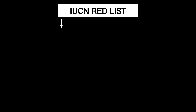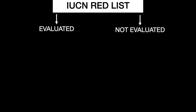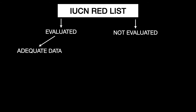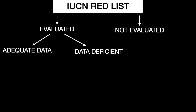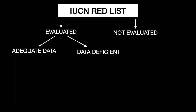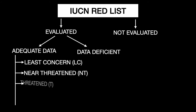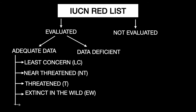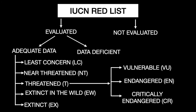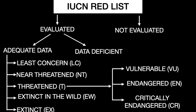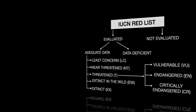The IUCN Red List is a critical indicator of the health of the world's biodiversity. When a species is researched, it can be evaluated or not evaluated. If evaluated, we can have adequate data about the species or it can be data deficient. If adequate data exists, the species can be classified as least concerned, near threatened, threatened, extinct in the wild, or extinct. If a species is threatened, it can be vulnerable, endangered, or critically endangered.